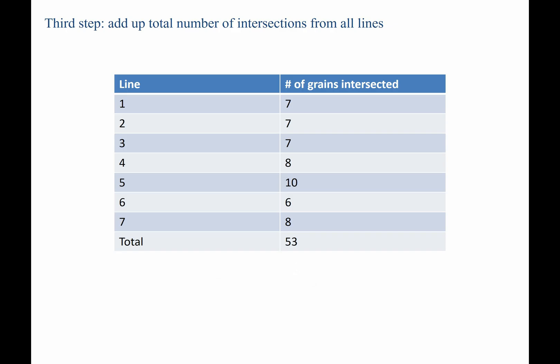Doing so, you compile a table like this. Here are our 7 different lines and here's how many intersections for each one. You add these up, and we find that there's a total of 53 intersections.